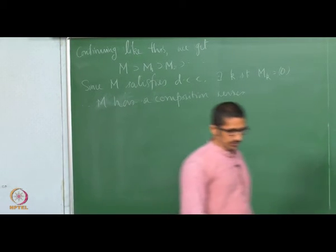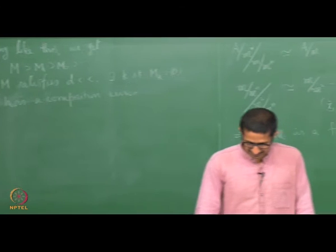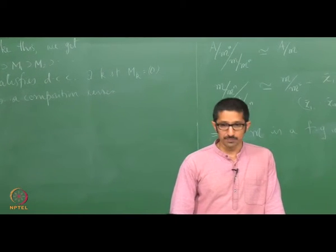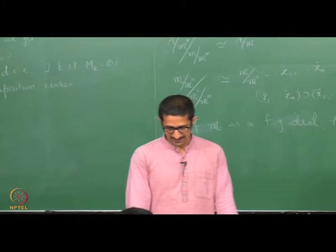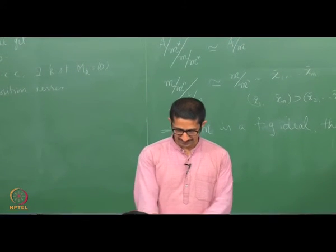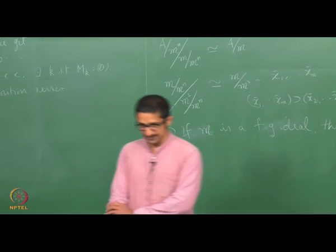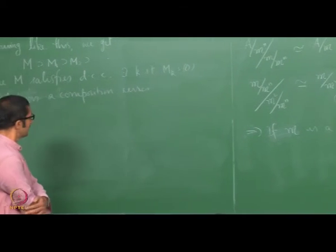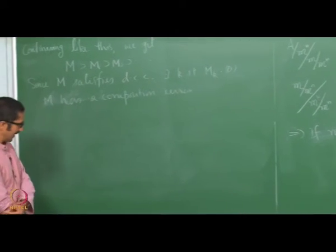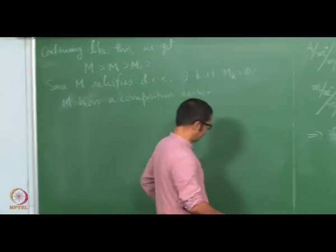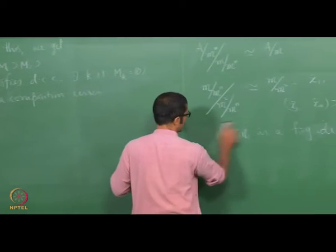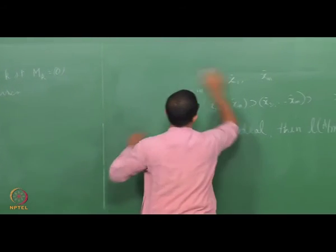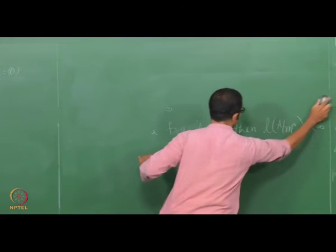So having a composition series is equivalent to saying that M has both ACC and DCC. The notion of length is ring-theoretically very close to the dimension of a vector space.